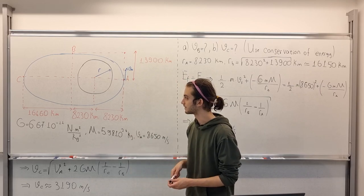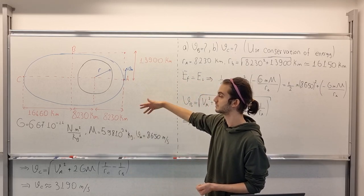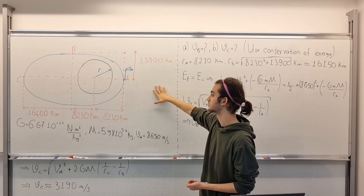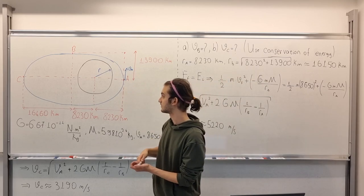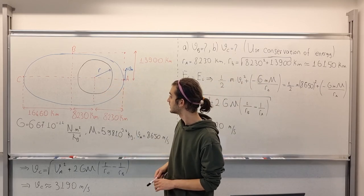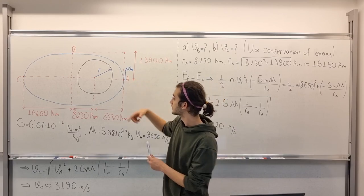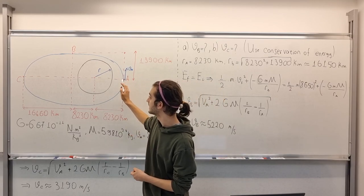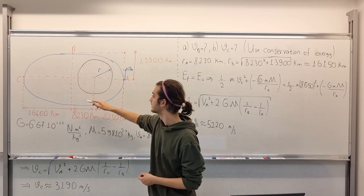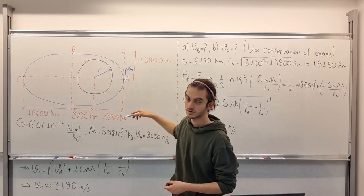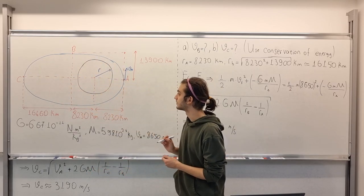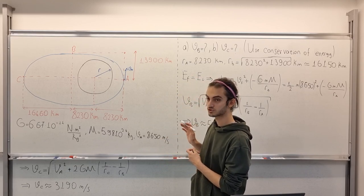So here let me present the question to you. This is our system. We have Earth. This is Earth actually. And a satellite following this elliptic path around it, around Earth. So in the question, in option A,